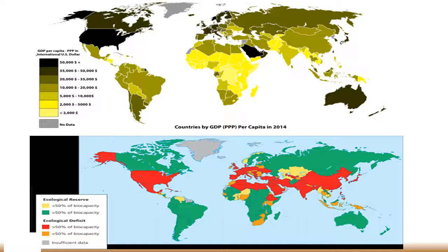The next shade of yellow represents the $2,000 to $5,000 range of GDP, which qualifies as the lower middle income category. There are definitely more countries exhibiting a GDP in this category than in the high income category. When you look at Africa, about 75% of Africa falls in this lower middle income range based on GDP.